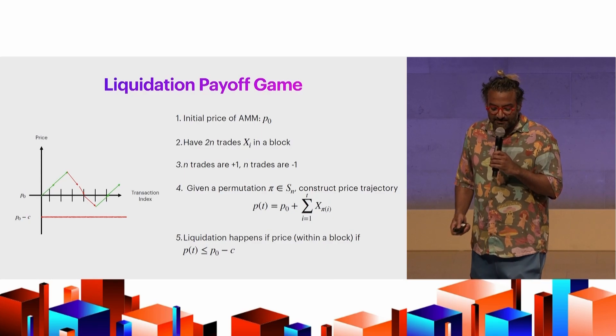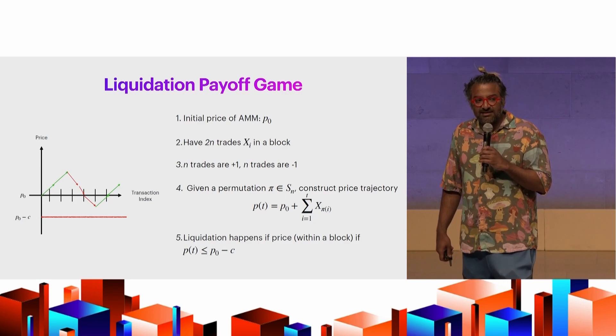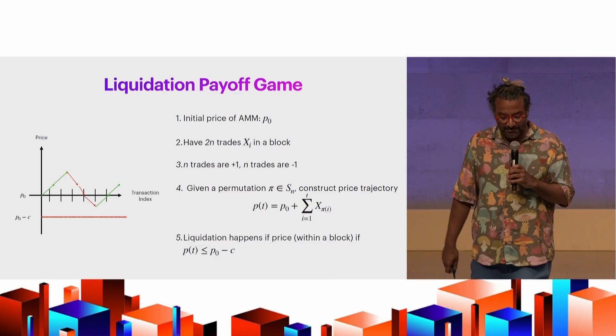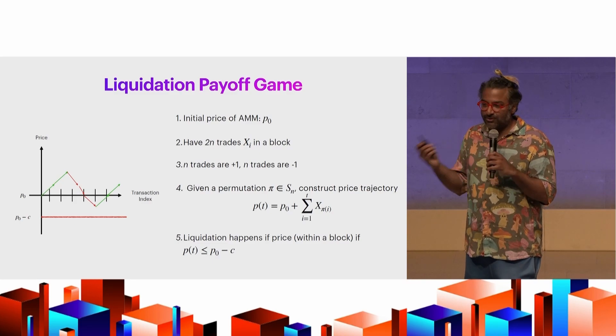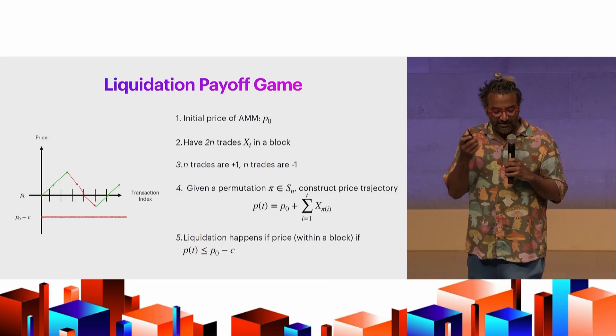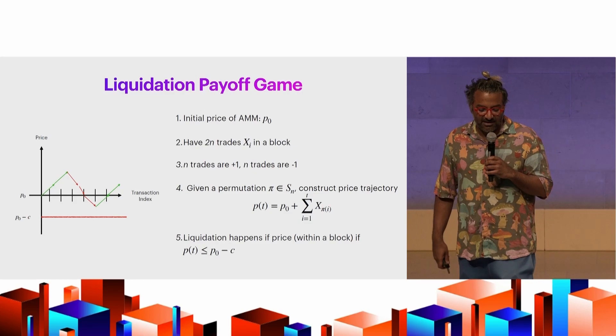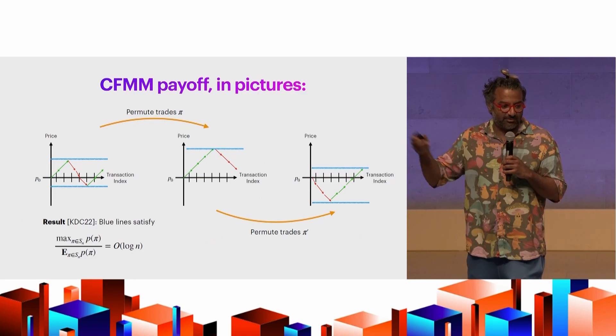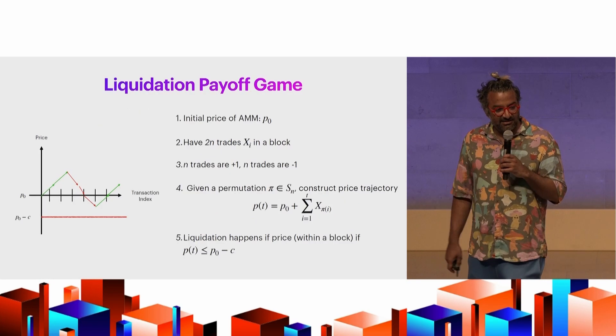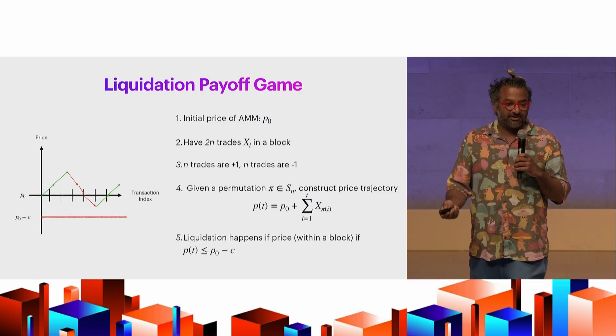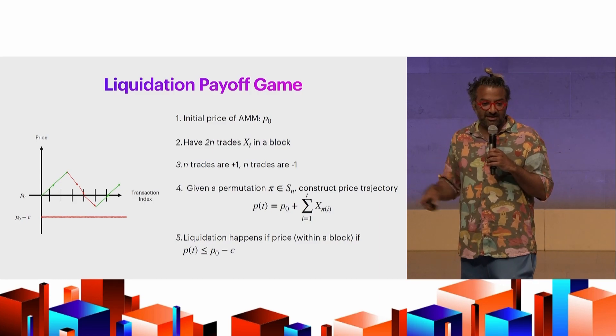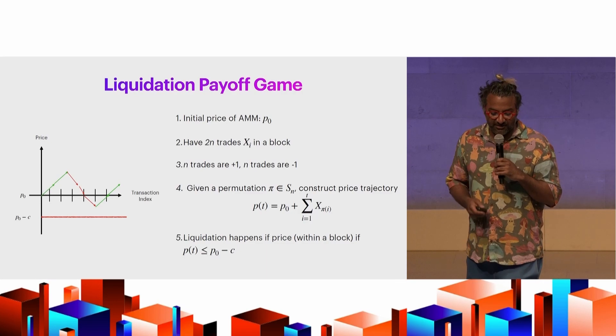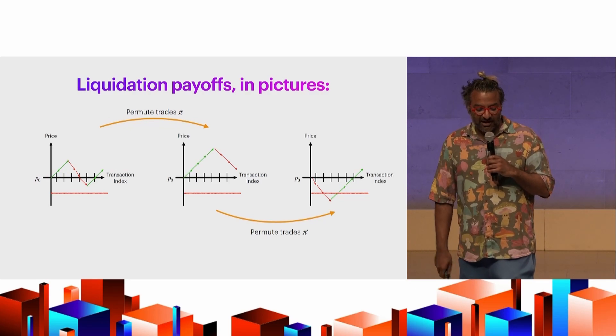But the thing is, this doesn't really dictate all the other types of MEV, right? It doesn't tell you anything about NFT minting, it doesn't tell you anything about liquidations, it doesn't tell you anything about cross-chain. So we'll start with a gedanken, like a thought experiment. And the thought experiment is, suppose we construct, you know, this is not necessarily a good DeFi protocol, but this is just one that you can analyze. But imagine I have an AMM, I have two n dex trades, half of the trades are plus one, so half are the green arrows, half of the trades are minus one, down arrows. And given a permutation, I get one of these charts, right? One of these three things. You can see how permuting the indices gives you different price trajectories.